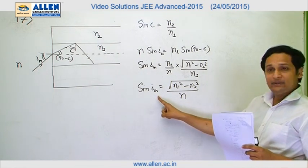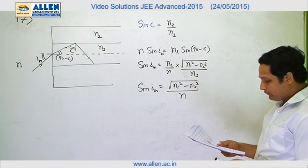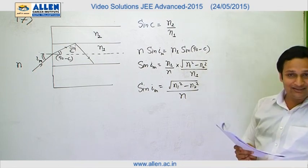So we will get sin IM equals √(N1² - N2²) / N. We will have to check options A, B, C, D.